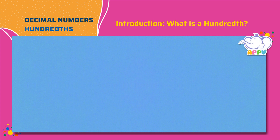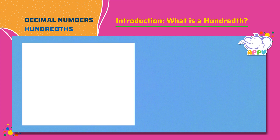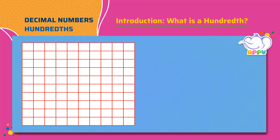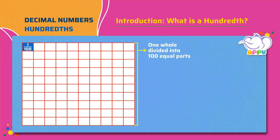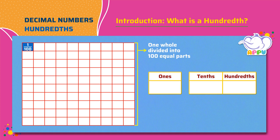What is a hundredth? This square represents a whole. Let's divide the square into one hundred equal parts. Then one part represents one by one hundred. We write this in a place value chart. There are zero ones, zero tenths, and one hundredth. One hundredth as a decimal number is 0.01.